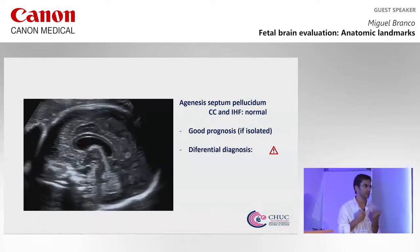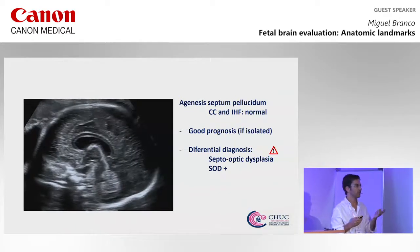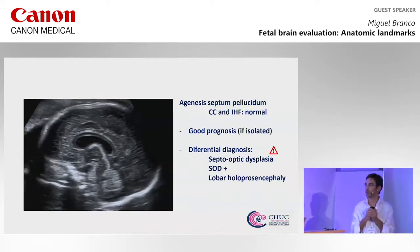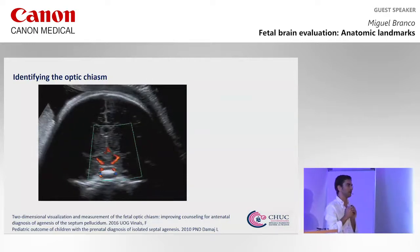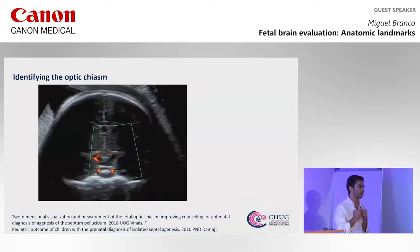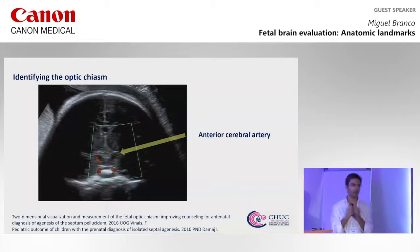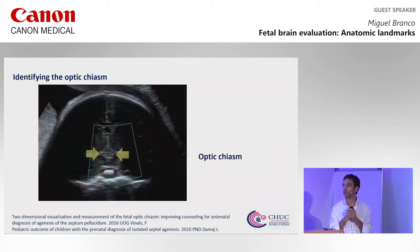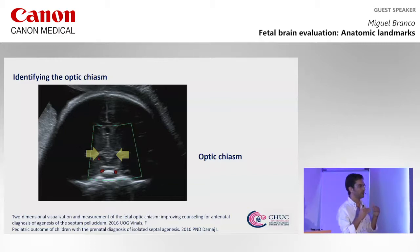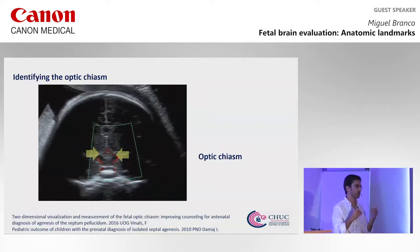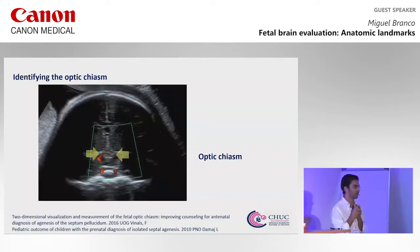But we must also discuss differential diagnoses like septo-optic dysplasia, septo-optic dysplasia plus malformations of cortical development, lobar holoprosencephaly, or disruption of the septum pellucidum. We can identify the optic chiasma on prenatal ultrasound. The easiest way, as described by Vinales, is on coronal approach: we take the anterior cerebral artery as a landmark and the optic chiasma is between the two yellow arrows. Bear in mind that a normal optic chiasma on prenatal ultrasound or MRI does not completely exclude septo-optic dysplasia, so it's still a difficult counselling situation.